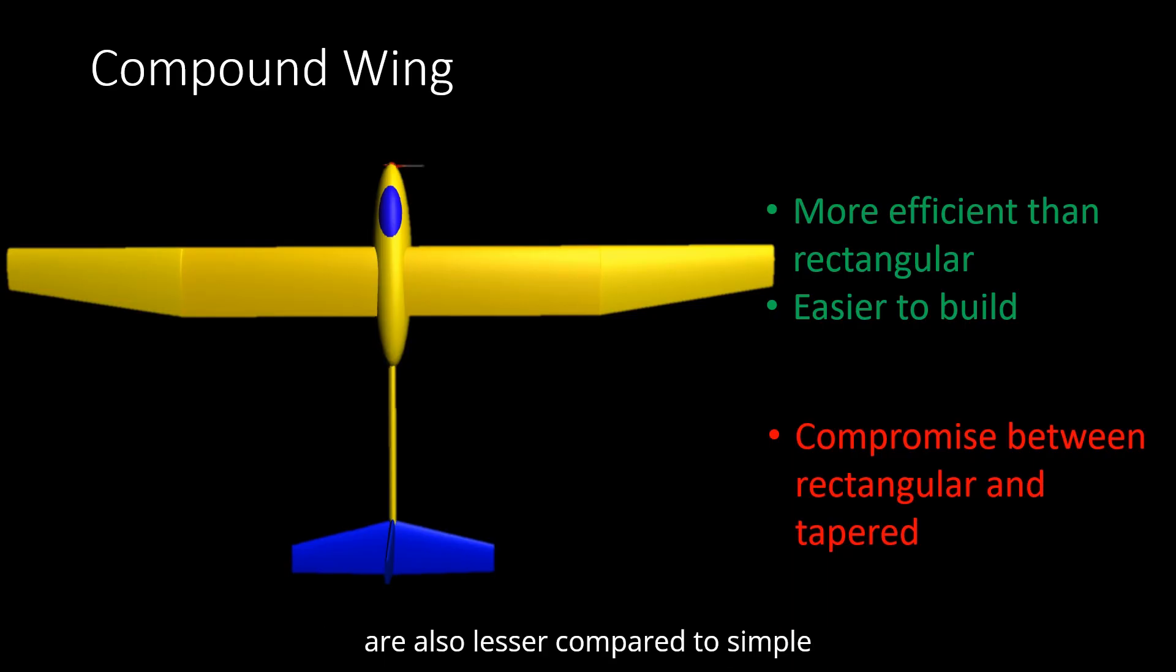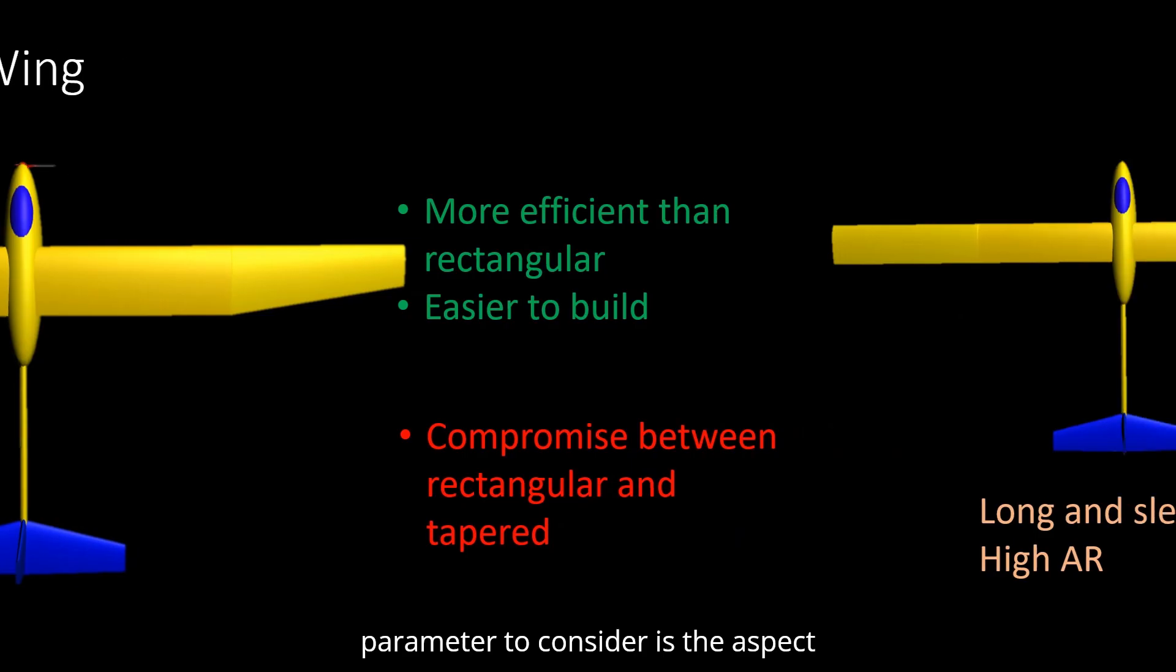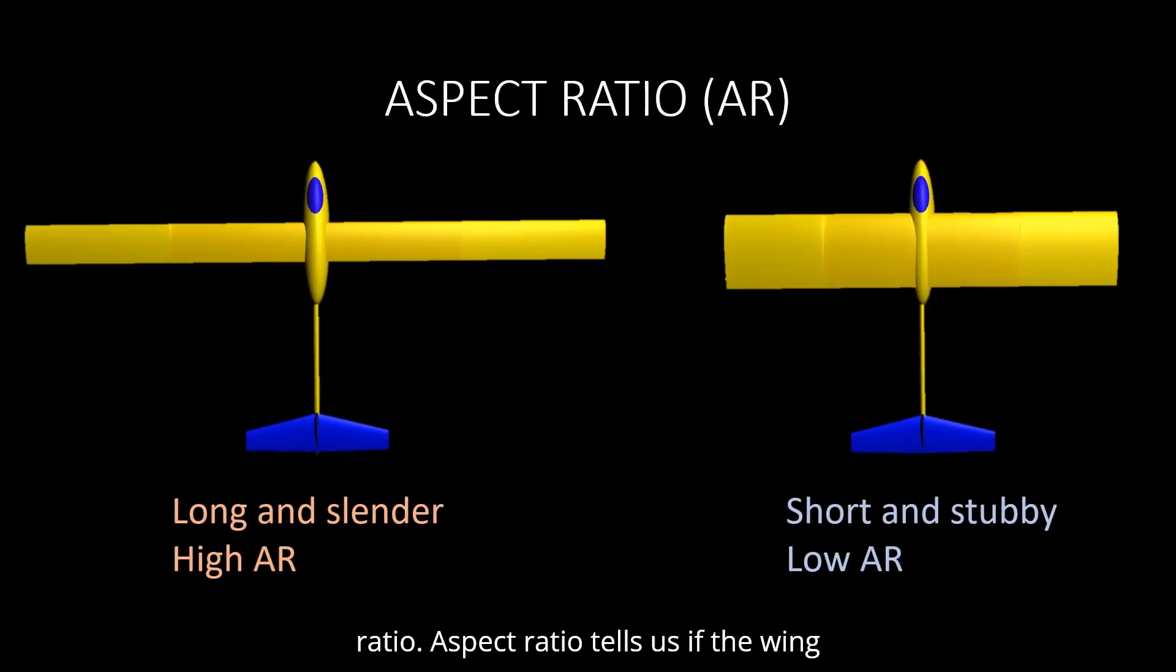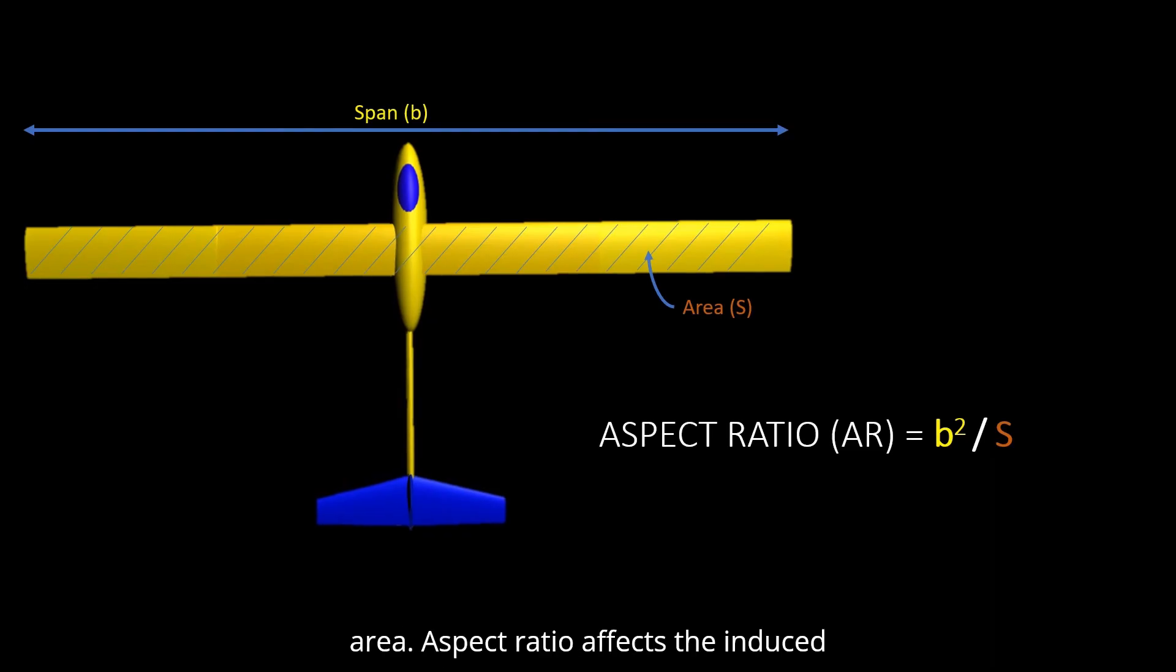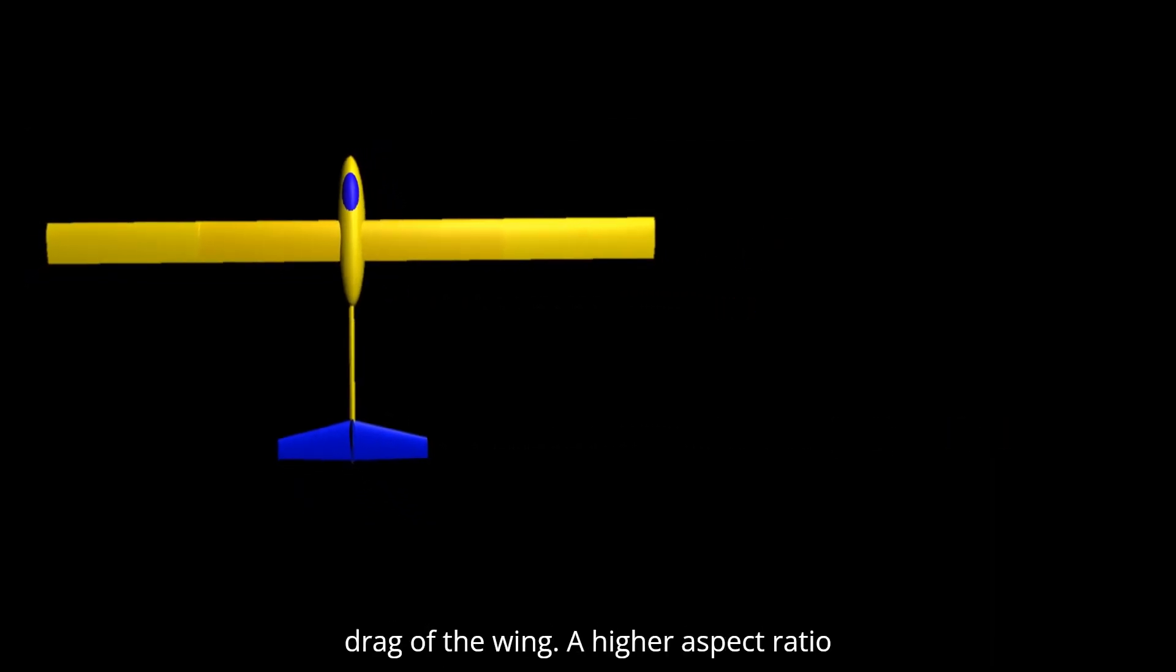Another major design parameter to consider is the aspect ratio. Aspect ratio tells us if the wing is long and slender or short and stubby. The aspect ratio can be calculated by dividing the span squared by the wing area. Aspect ratio affects the induced drag of the wing.